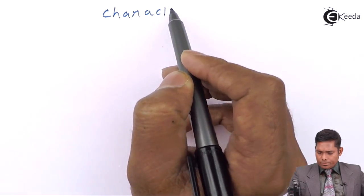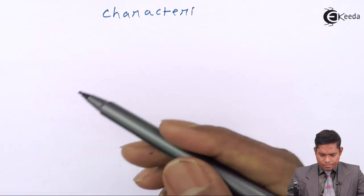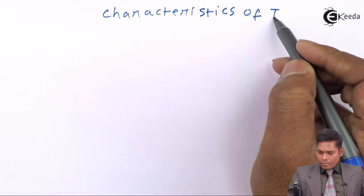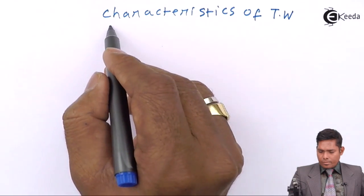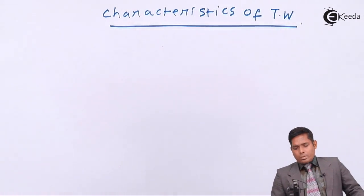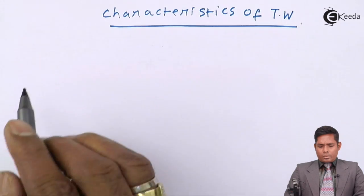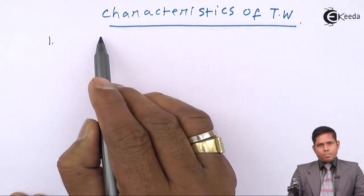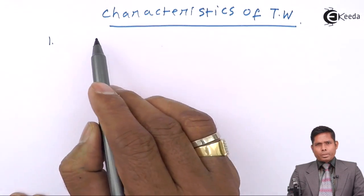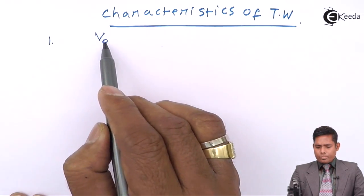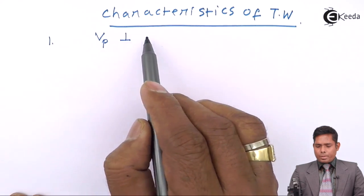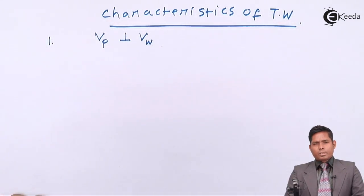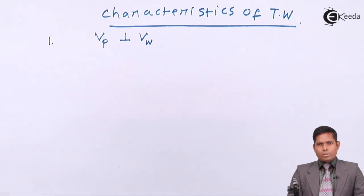Characteristics of transverse wave. First point: the particles of the medium vibrate perpendicular to wave propagation. That is, the velocity of the particle is perpendicular to the velocity of the wave. This happens in the case of a string wave, or wave on a string.